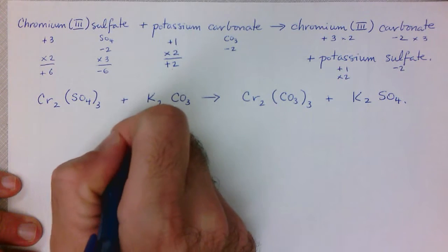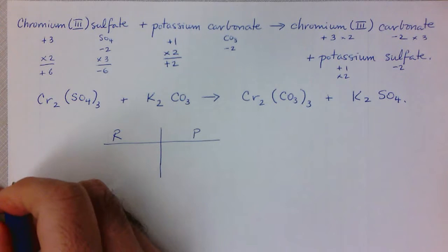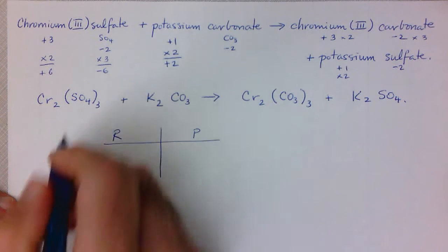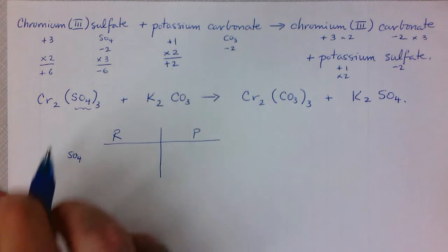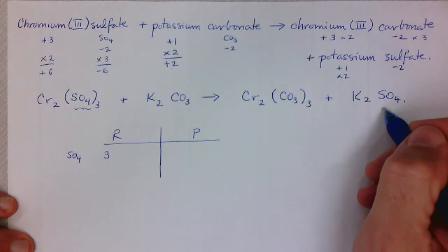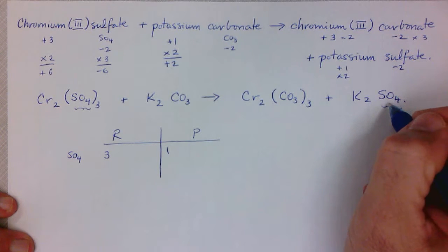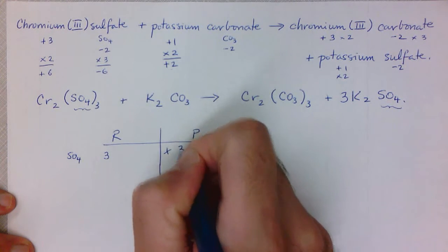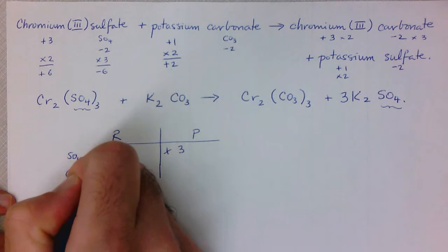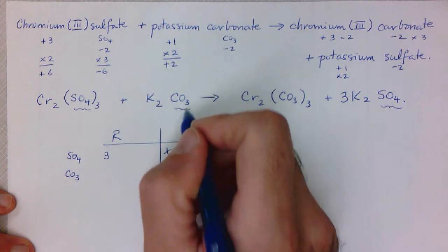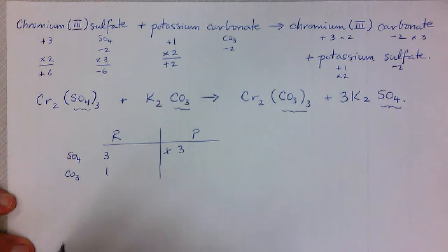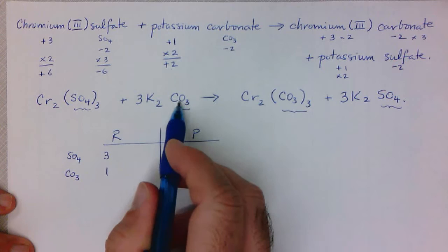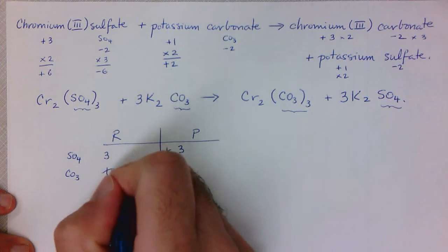Since this one is a bit more complicated, I'll make a chart with reactants and products. Starting with the polyatomic ions — let's look at SO₄ first, treating it as a single entity. In the reactants we have three SO₄, but in the products we have only one, so I'll put a coefficient of 3 in front to balance it: three and three. Now for CO₃ carbonate: on the left we have one, on the right we have three, so I'll put a coefficient of 3 in front to get three carbonates on each side.